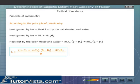Now substitute the recorded values in the equation and calculate the specific latent heat capacity of fusion of ice, the only unknown quantity.